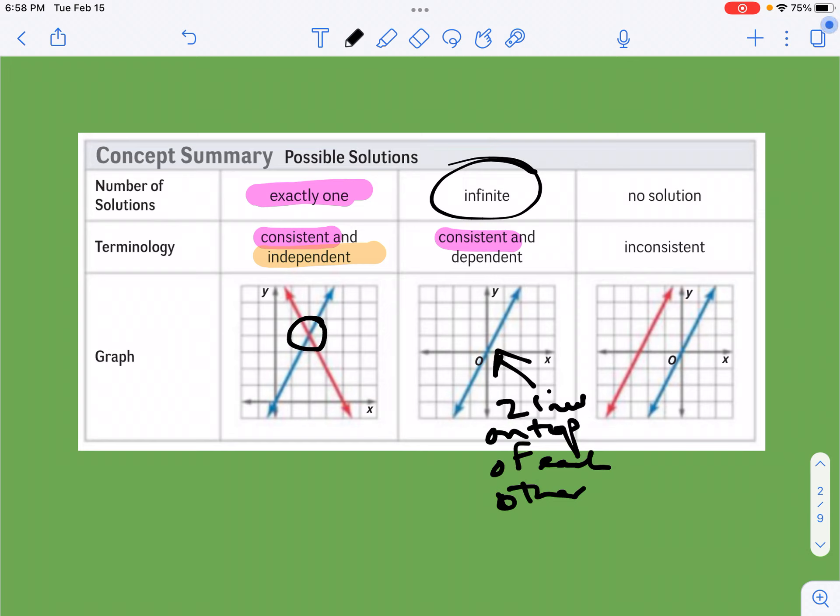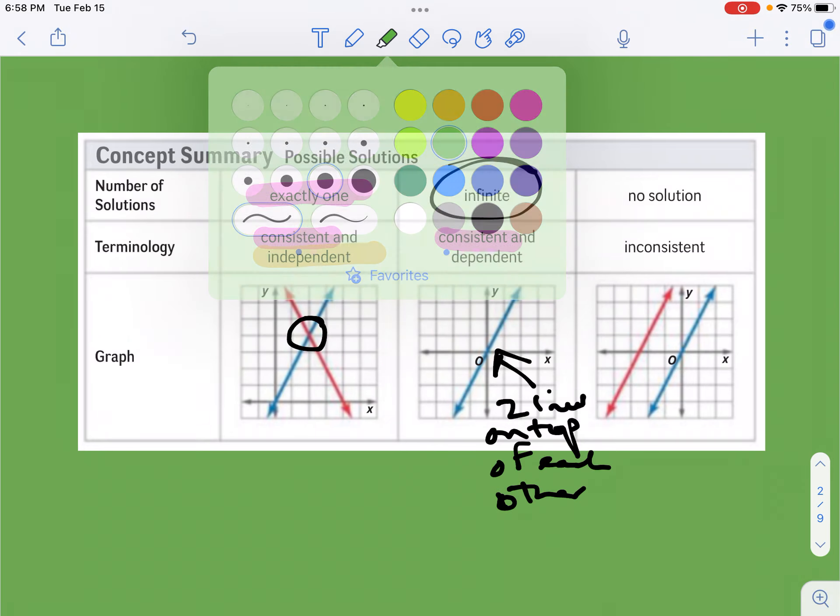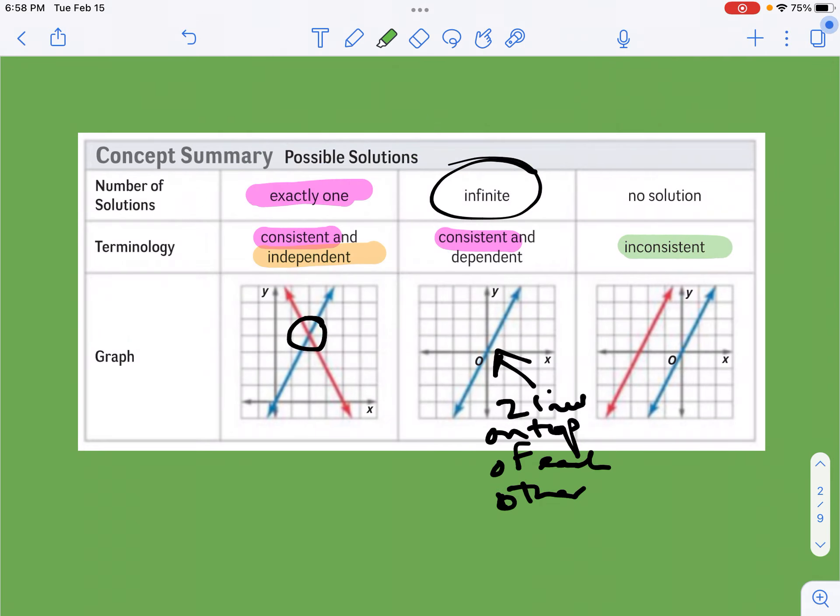And then the last situation, we just call it inconsistent. It's not independent or dependent, because there's not a solution to it. The lines are inconsistent with each other. They do not meet. You will get that situation when they have the same slope, but different y-intercepts. So they're parallel lines, that's kind of the way that works. Hopefully that makes some sense to you.